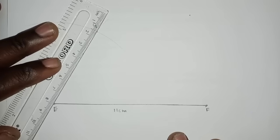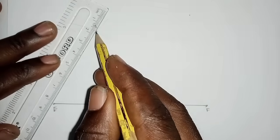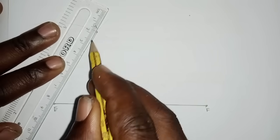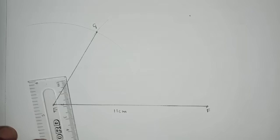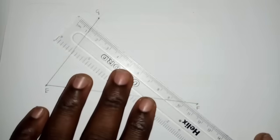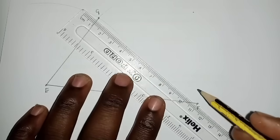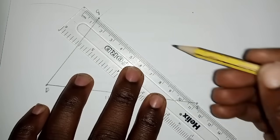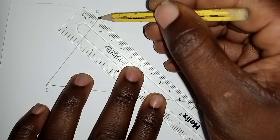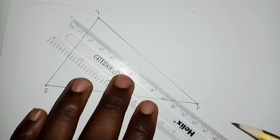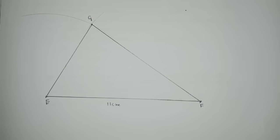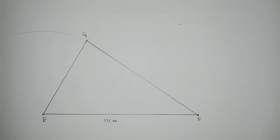You can now join the points. G is over there — join the points. Put your ruler nicely; this is the triangle we're talking about.